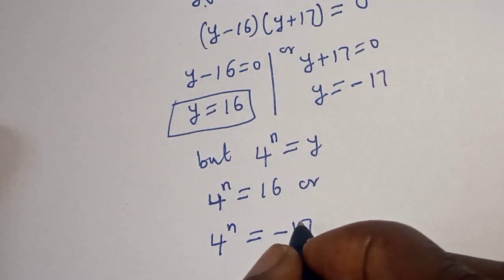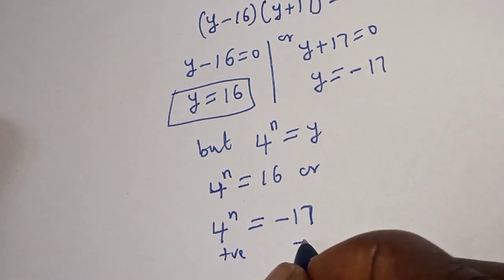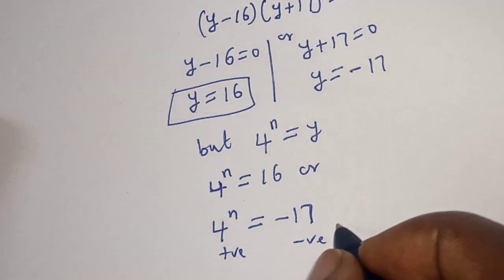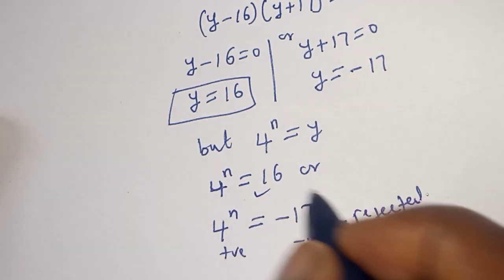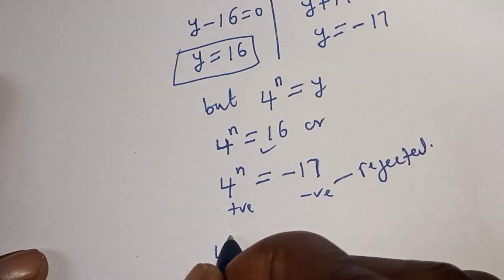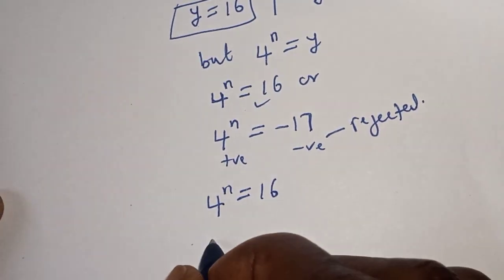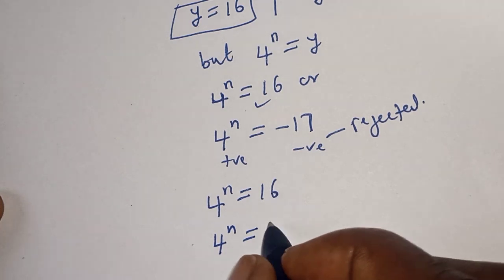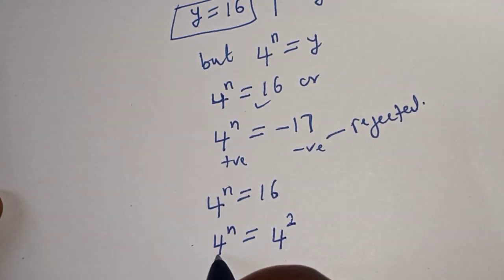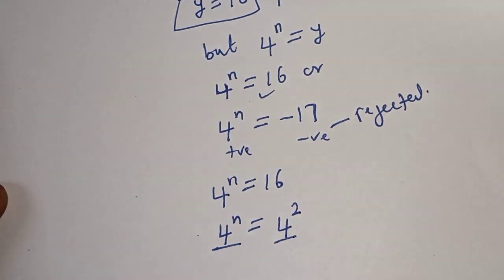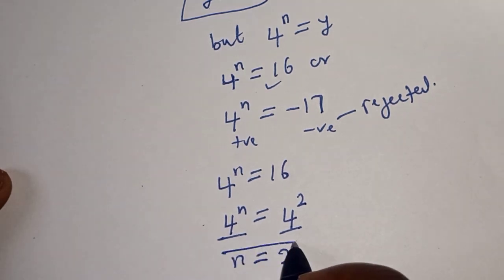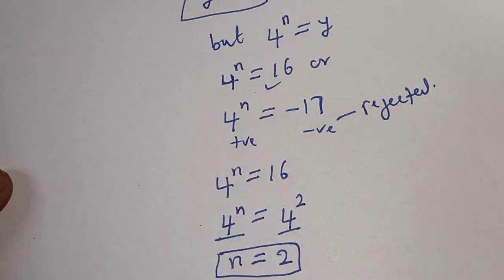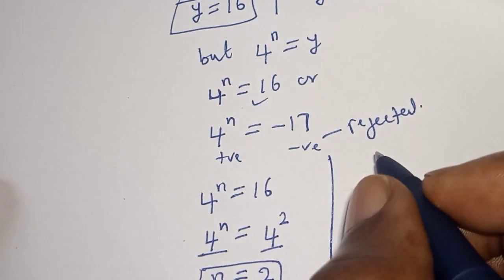Since 4 raised to power n must be positive, y equals minus 17 is rejected. The only valid solution is 4 raised to power n equals 16, which is 4 squared. Since both sides have the same base 4, we get n equals 2. That is our final answer.